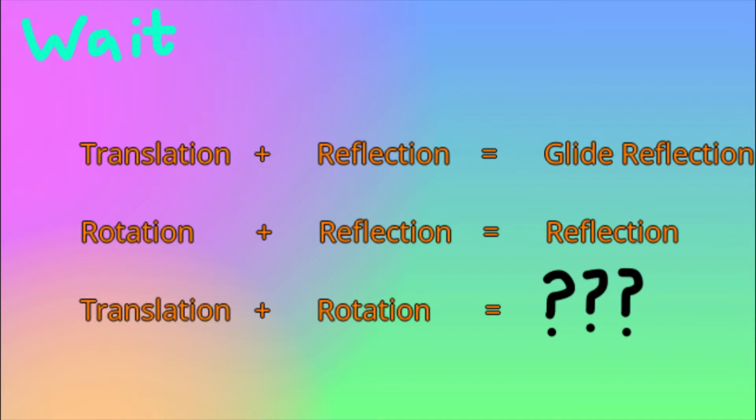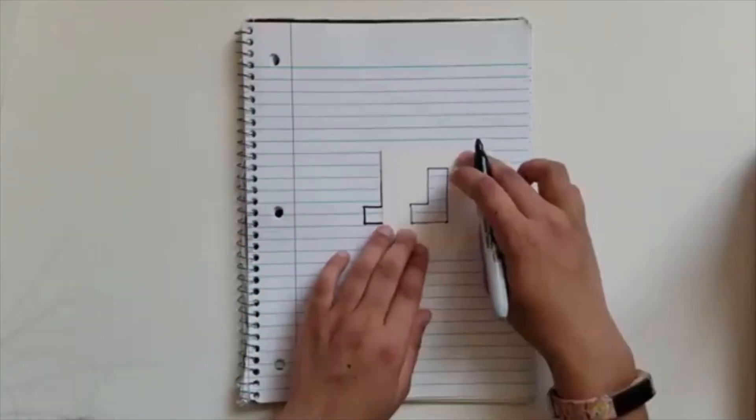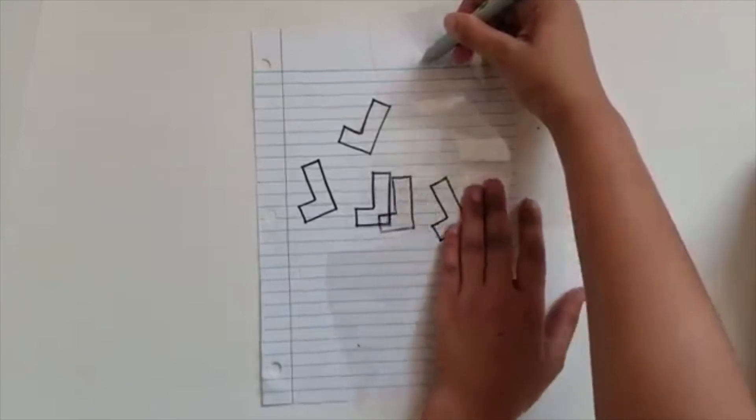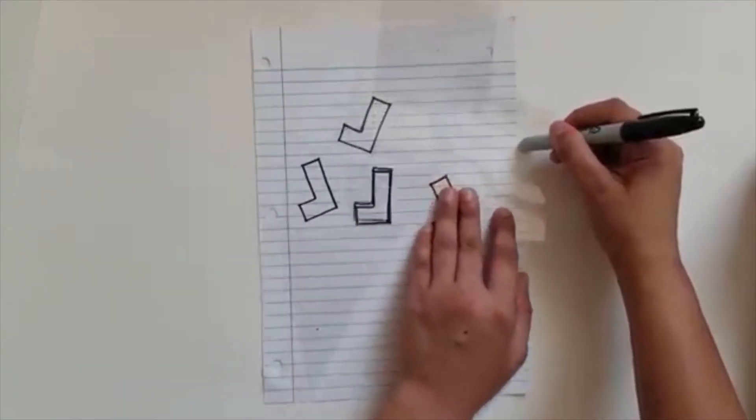But wait, and this is where it gets interesting. A translation and a rotation results in a normal rotation, no matter where the two objects are on the plane.